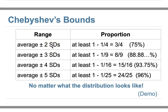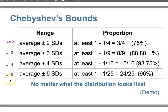Using z = 2, 3, 4, and 5: z = 2 gives at least 75% of data within mean ± 2 SD; z = 3 gives at least 88.88% within mean ± 3 SD; z = 4 gives at least 93.75% within mean ± 4 SD; and z = 5 gives at least 96% within mean ± 5 SD. These bounds apply to all distributions regardless of shape.